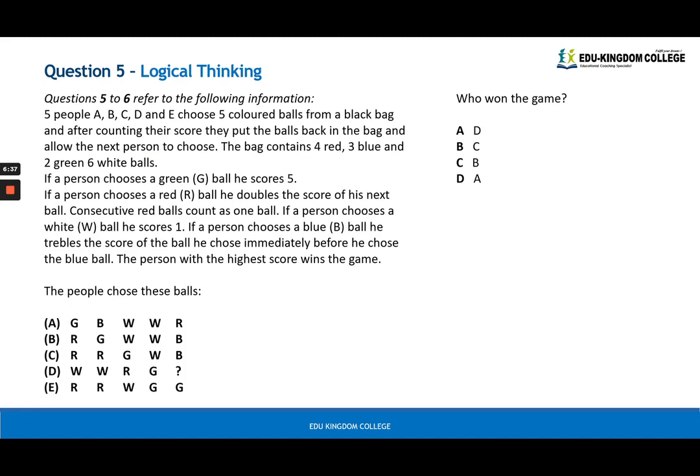For this question there were a couple rules that were in the text. I would just start off by writing down all of the scores for A to E. So the first person is A. Green ball means five, blue ball, blue is here, it trebles the score, three times the score, now the score is 15. White ball just adds one, so you have 16, you have 17. And for red ball he doubles the score of his next ball. This is at the end so the red won't have anything to double, so it will just be 17.